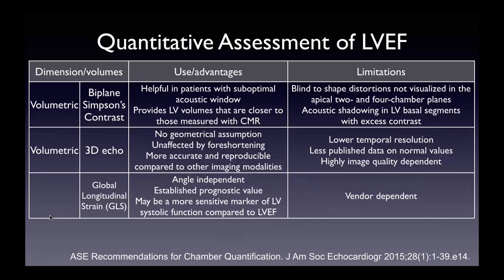Advantages and limitations of volumetric measures: Simpson's biplane 2D with or without contrast — contrast helps with suboptimal acoustic windows, and studies have shown it provides volumes closer to those measured with CMR. It is blind to shape distortion not visualized in the apical four and two-chamber views. With contrast, you do have acoustic shadowing at the basal segments with excessive use of contrast, but there are ways to get around that.